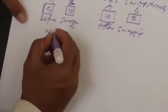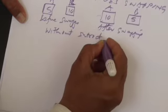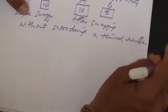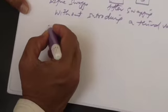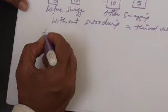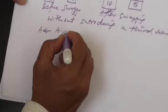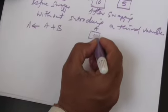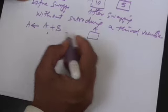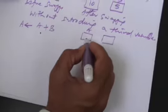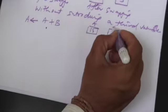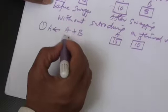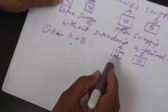Without introducing a third variable, what you can do is: first, add the values present in A and B and store back in A. So A becomes A plus B. Since A is 5 and B is 10, A now holds 15. However, B is still holding the value 10.